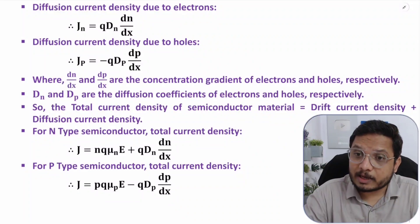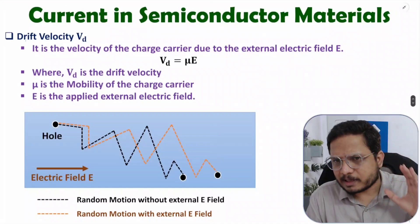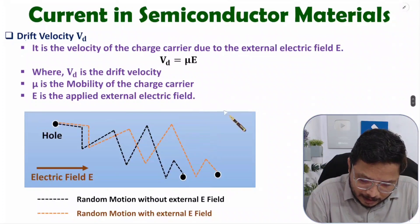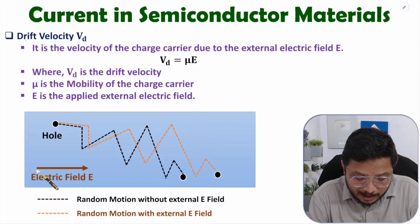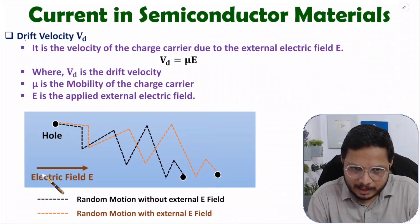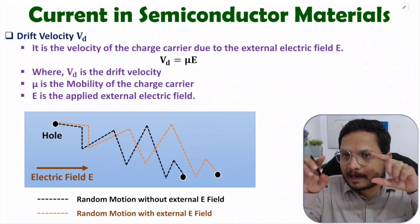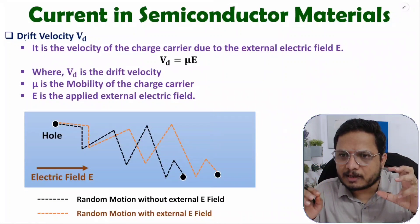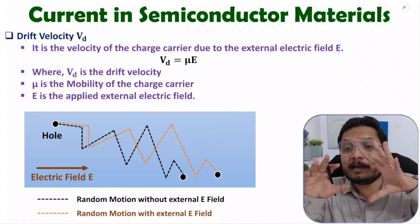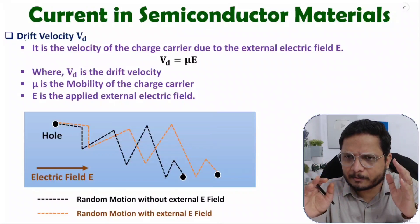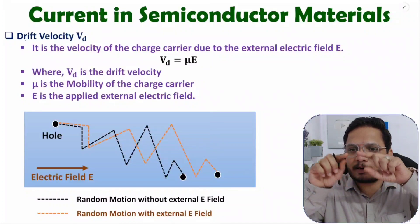Let us try to understand first what is the meaning of drift velocity. To understand drift velocity I'll consider one practical situation. Let us consider this is a semiconductor material and it is not placed under an external electric field. Inside the material there will be charge carriers — holes and electrons — and those holes and electrons will be having random motion. The resultant of that random motion will be zero.